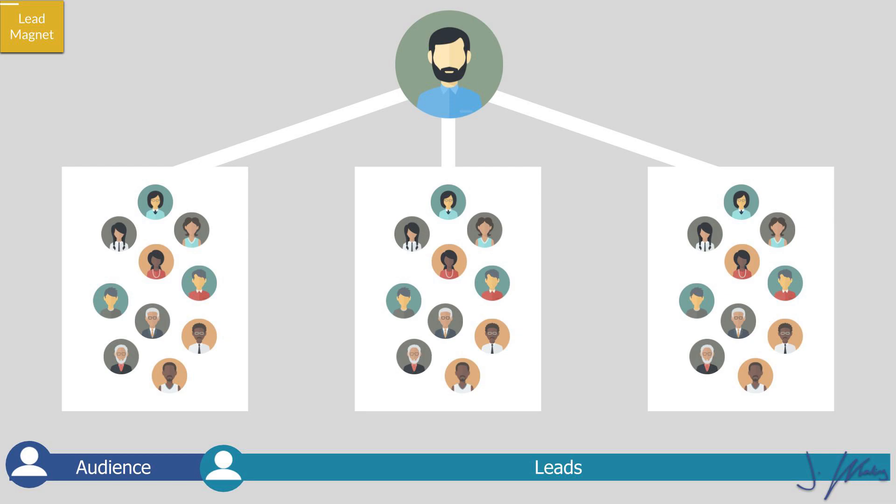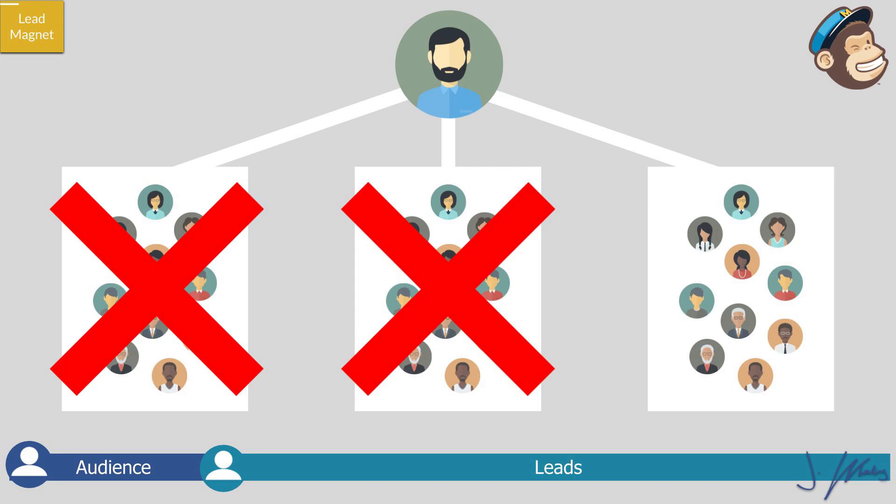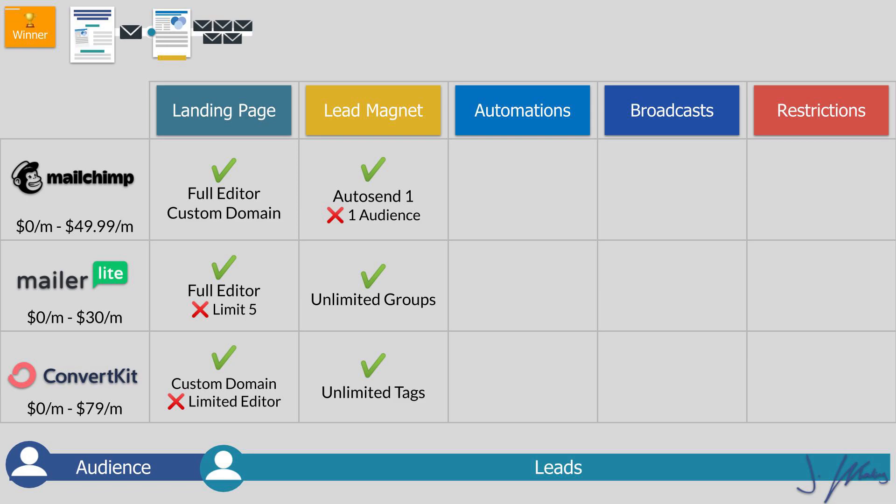They all call them different things — an audience, a tag, or a group — essentially indicating that this person came from a specific landing page and wanted a particular lead magnet or offer. With the free plan of MailChimp, you can only have one of those. So it doesn't really matter that you can create unlimited landing pages, because you have to tag everyone as if they came from the same one. That's why ConvertKit and MailerLite come out on top here.